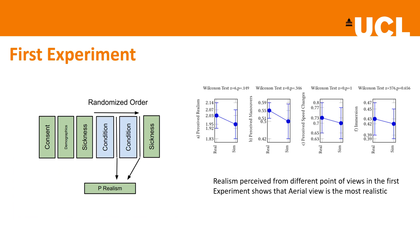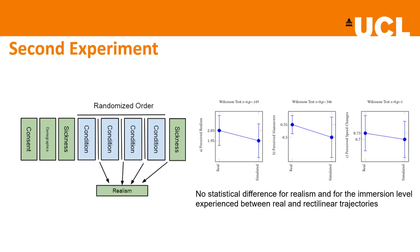In the first experiment, 75% of participants reported perceiving the rectilinear algorithm as either realistic or plausible. The results validated the plausibility of the rectilinear trajectories, especially in the aerial view, which we selected as the term of comparison in the second VR-based experiment.